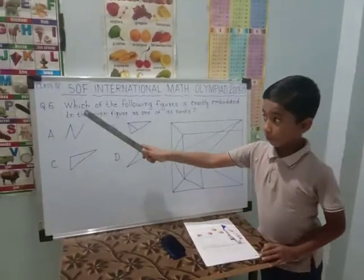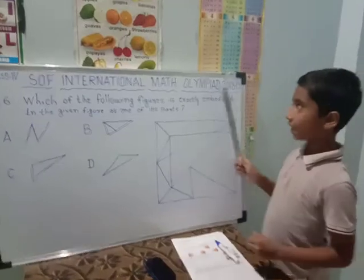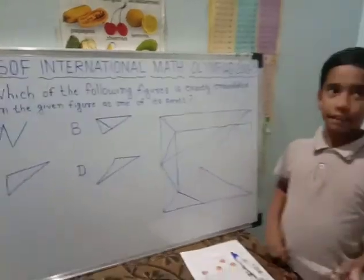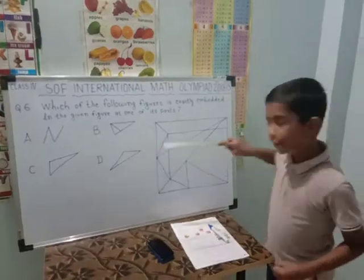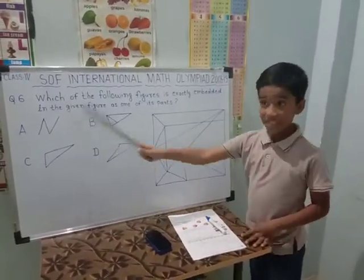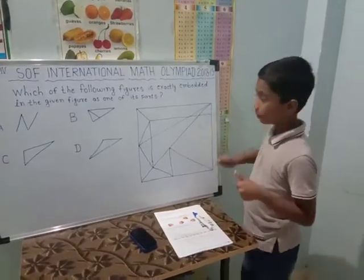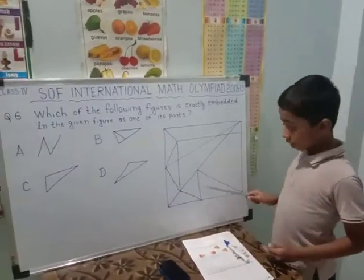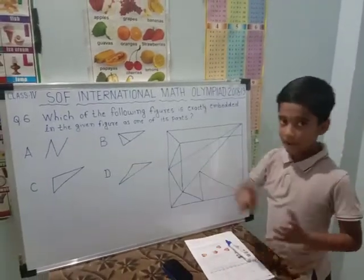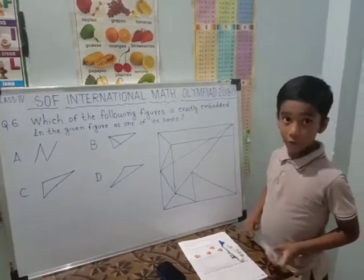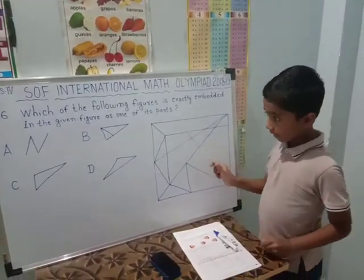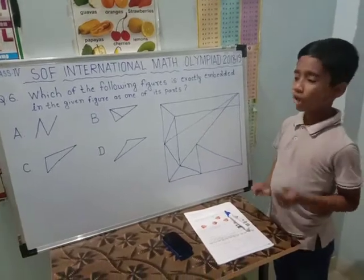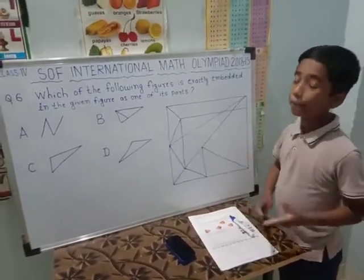Next question: which of the following figures is exactly embedded in the given figure as one of its parts? They ask us which figure is embedded here. We will see the first option — it is M. We will see where M is in this figure. It is not there in any part, so it is not embedded. The second option is a triangle. Triangle is not found anywhere in the figure, so it is not embedded either.